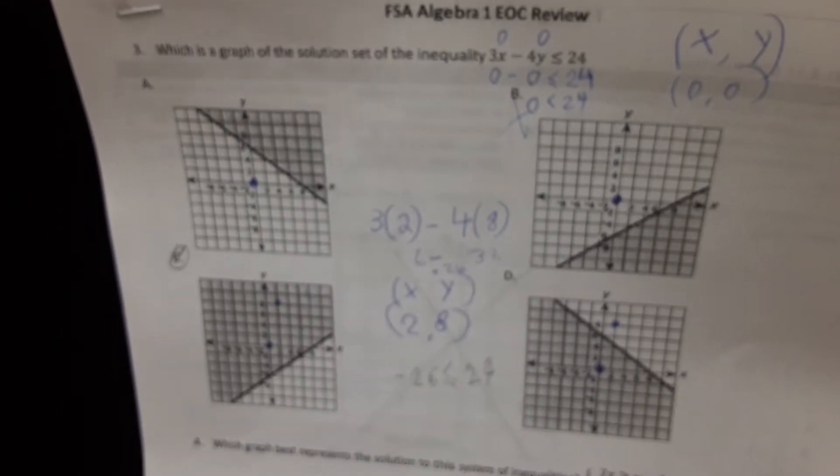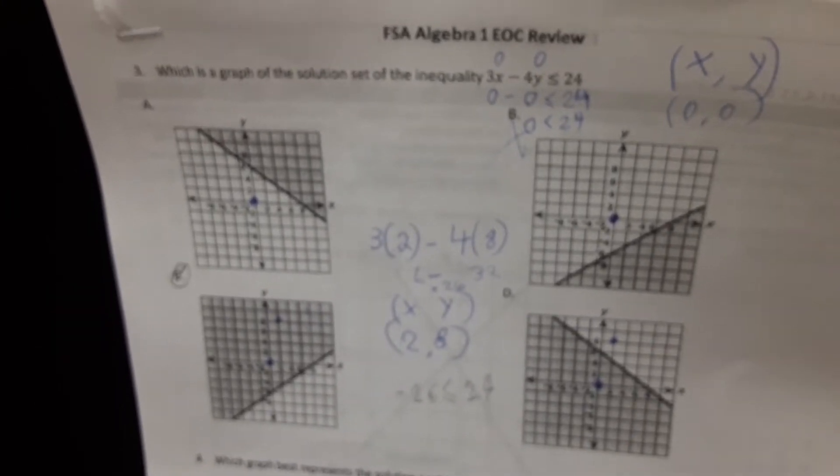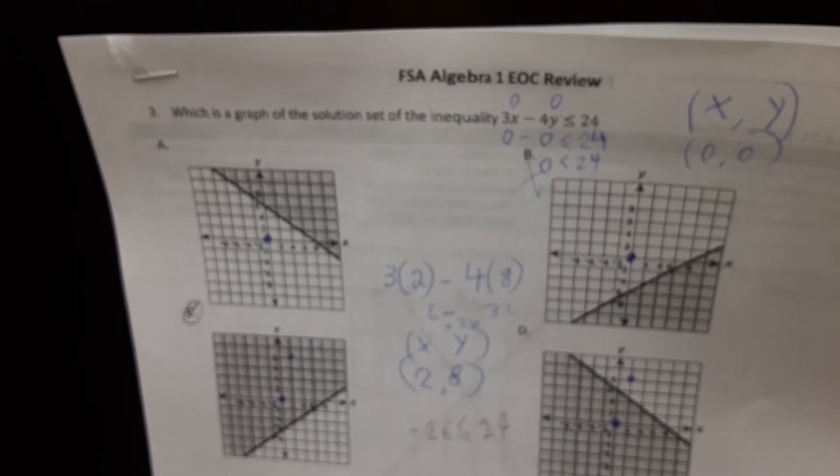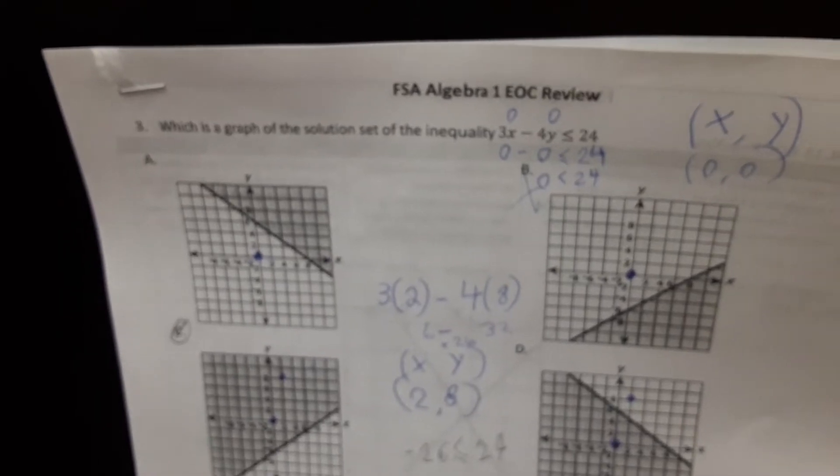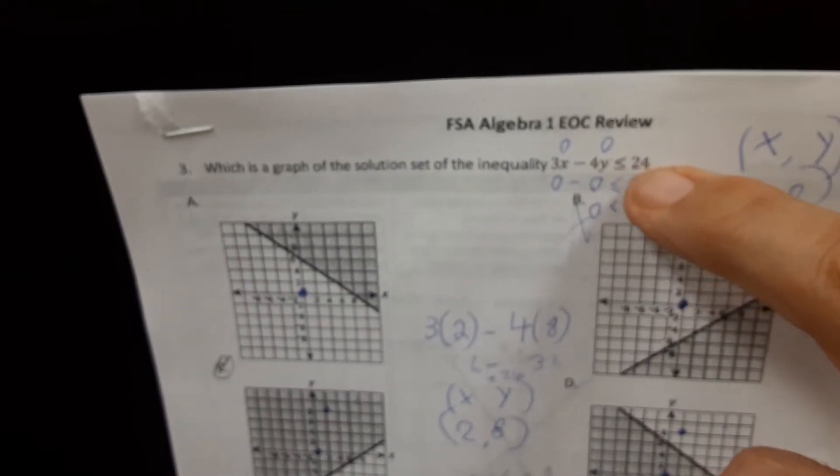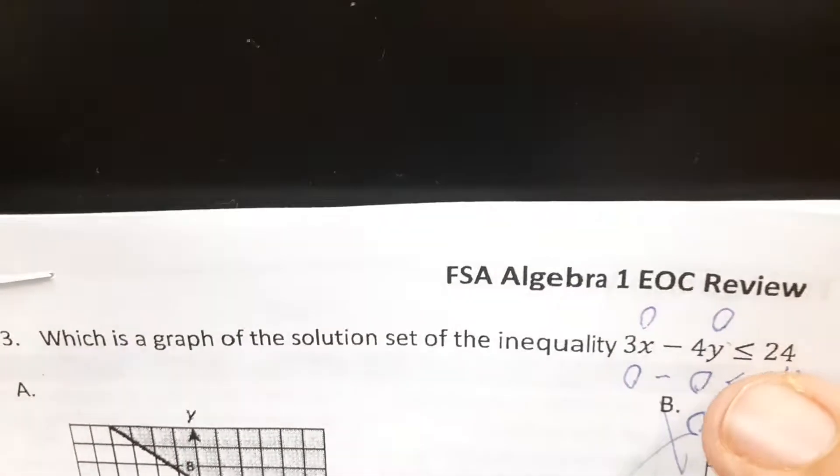Which is a graph of the solution set of the inequality 3x minus 4y is less than or equal to negative 24? Right, negative 24.